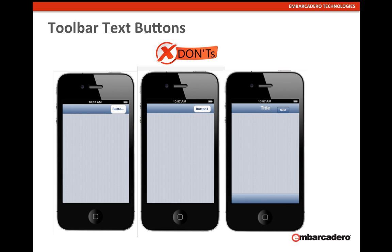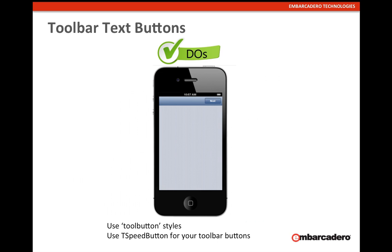For toolbar text buttons: you shouldn't parent a T-Button to a toolbar because it's not designed to be a toolbar button. Speed buttons are really designed to be used for toolbars in your mobile application. In the do's screenshot, you use the tool button style for a toolbar text button, use T-SpeedButton, anchor it to the top right, and ensure equal spacing between the top and bottom of the button relative to the toolbar.